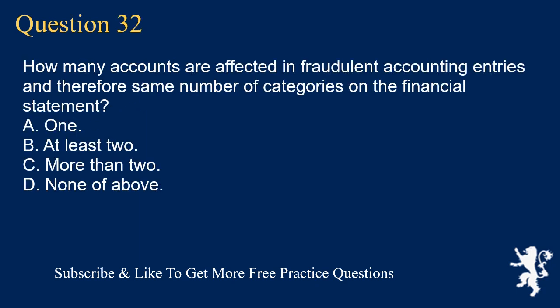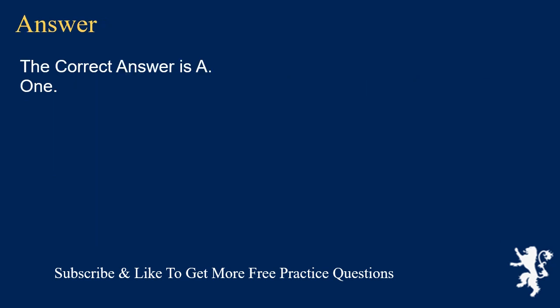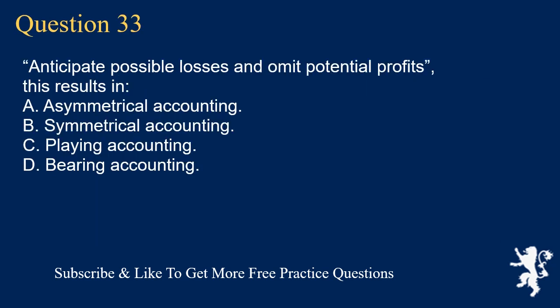Question 32: How many accounts are affected in fraudulent accounting entries, and therefore the same number of categories on the financial statement? A. 1. B. At least 2. C. More than 2. D. None of the above. The correct answer is A. 1.